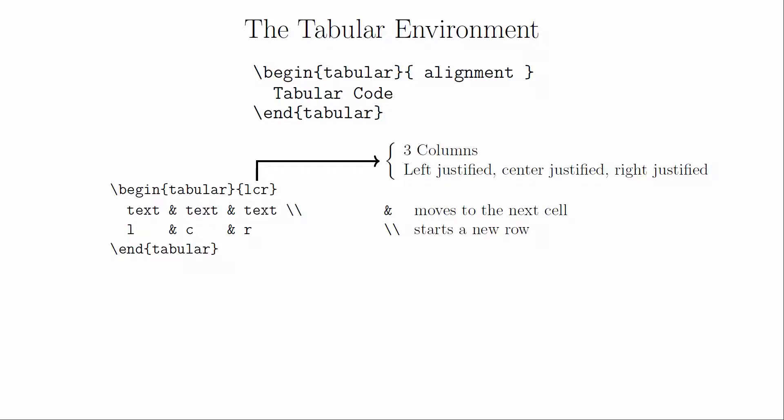To fill in the values in the table, we simply work in rows from left to right. Each time we want to move over to the next cell, we use an ampersand. And when we get to the end of a row, we use a double backslash to start a new row. If you forget the double backslash, LaTeX will complain when you try to compile your document.